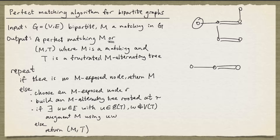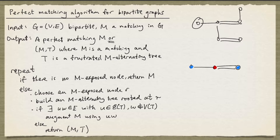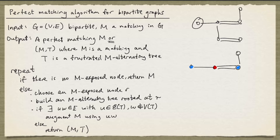Now my tree will look like this. Let me mark the nodes in the even set with blue and nodes in the odd set with red. We stop building the tree because we can't add this pair here, since this edge is joined to a node in the odd set. But we do see that there's an edge here that joins a node in the even set and a node not in the tree. This is indeed an M-augmenting path, so we can augment the matching. We see that there's no M-exposed node, and so this matching is returned as the perfect matching.